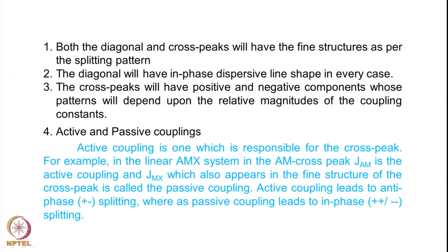Active coupling leads to plus-minus splitting - the antiphase nature we saw in the fine structures of the cross peaks. Whereas the passive coupling leads to further splitting of these into in-phase doublets. So the plus present here will split into plus-plus with the passive coupling constant separation, and the minus will split into minus-minus with the same separation. This principle will be applicable for all the cross peaks, and let us see how this manifests in the actual pattern in the cross peak fine structure.